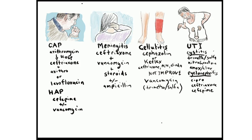Second, meningitis. Treat with high doses of ceftriaxone — 2 grams daily — and vancomycin, and initiate steroids before or at the time antibiotics are started. In patients 60 years of age or older, or patients who are immunocompromised, ampicillin should be added.